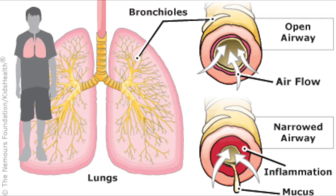Think of asthma when symptoms include recurrent cough, wheezing, shortness of breath, and/or chest tightness — due to variable airflow obstruction and bronchial hyperresponsiveness triggered by underlying airway inflammation. Symptoms generally occur or worsen at nighttime because this is when cortisol levels are lowest. Symptoms also worsen with exercise, viral upper respiratory infections, aero allergens, and pulmonary irritants such as first or secondhand smoke.